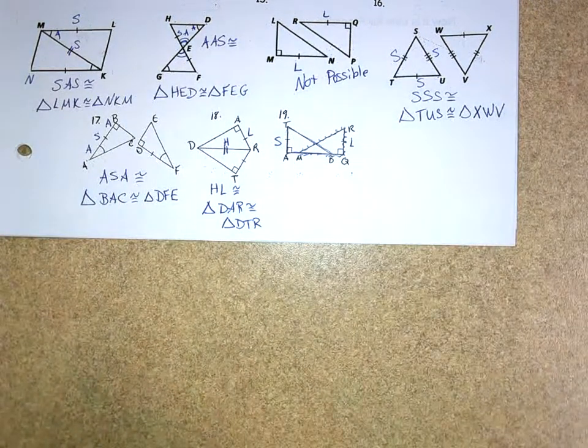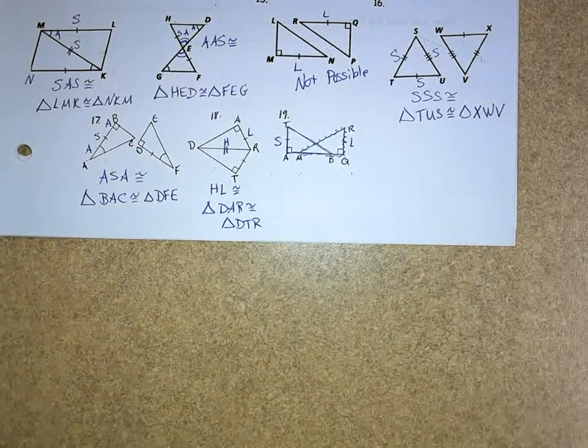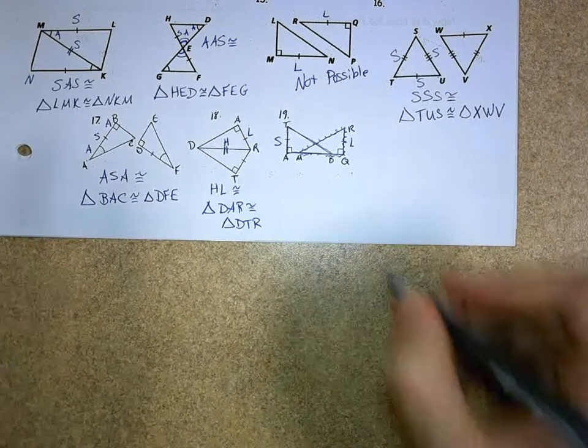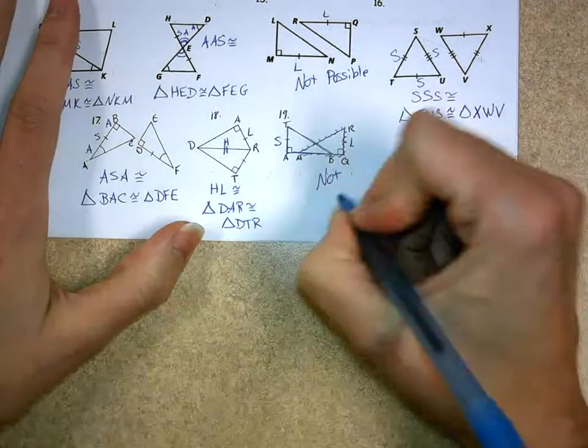But notice we have a right triangle with one pair of congruent sides. It doesn't work. There's just not enough information.